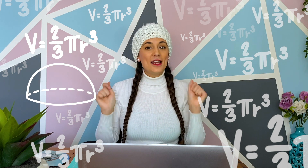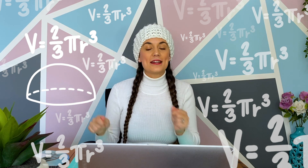So 2 over 3 times pi times the radius cubed. When you're calculating the volume of a hemisphere, remember it's the radius cubed, which means you have to divide the diameter by 2 to get the radius.